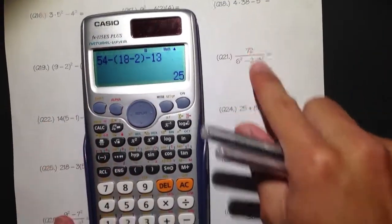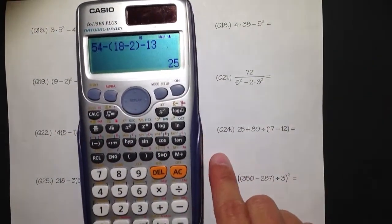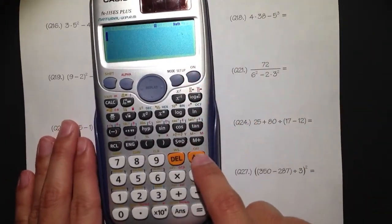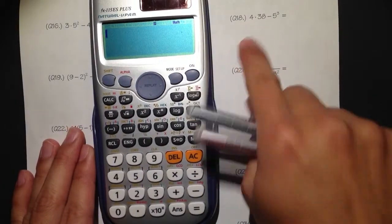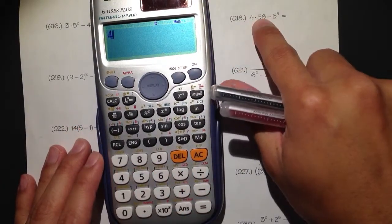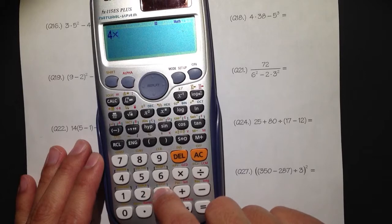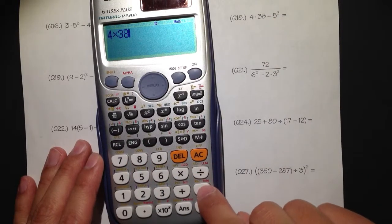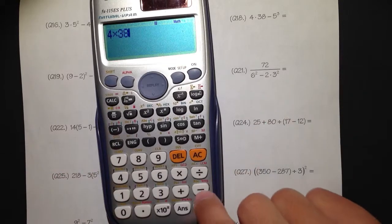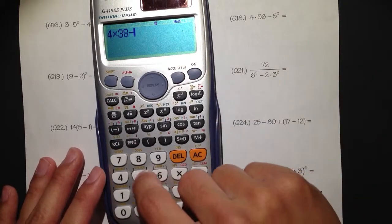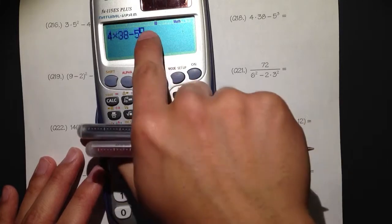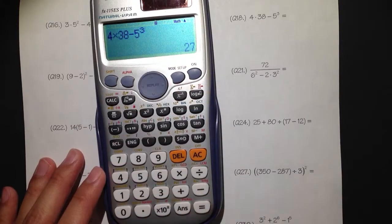And let's look at number 18. This is how you clear, or you can just press the AC. Doesn't matter. So number 18, we have 4 - that means to multiply. Multiply by 38. Minus. This is the minus, and this is the negative - I'll talk about that later. Minus 5. And we need the exponent, so hit the exponent button to the third power. 27.